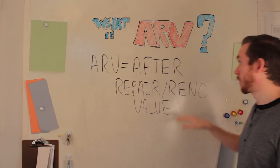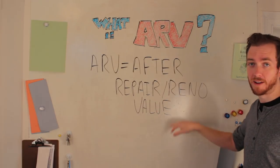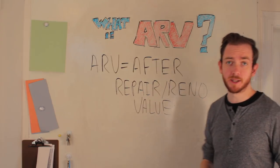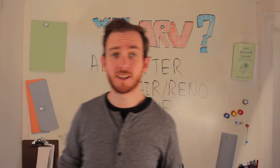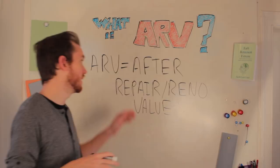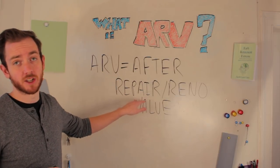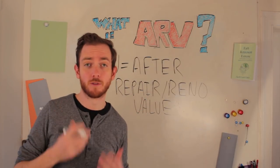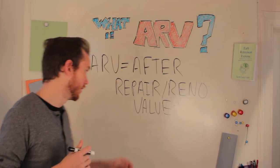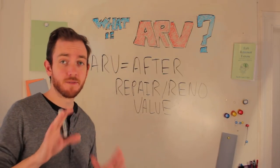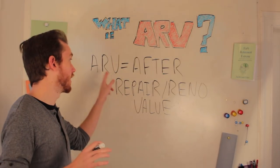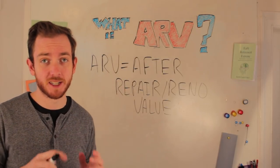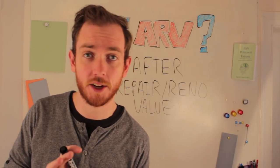ARV stands for after repair or reno value. You'll see that these two words are used interchangeably by a lot of real estate investors — don't get caught up on it. The key is it's after you've done your renovations or repairs to the property to get it up to its full actual and potential value. If you're new to my channel, the reason we talk about ARV so much is because I use what's called the BURR Investing Strategy.